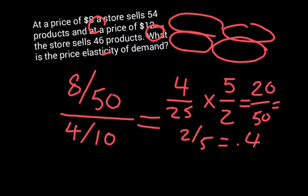By the way, you don't have to simplify the ratios the way I did. You can just take 8 divided by 50, plug it into your calculator to get the decimal, and then divide by 4 over 10. That's 0.4. So just take 8 over 50 as a decimal, divided by 4 over 10 as a decimal, and divide those two decimals. That's another way to get the elasticity.